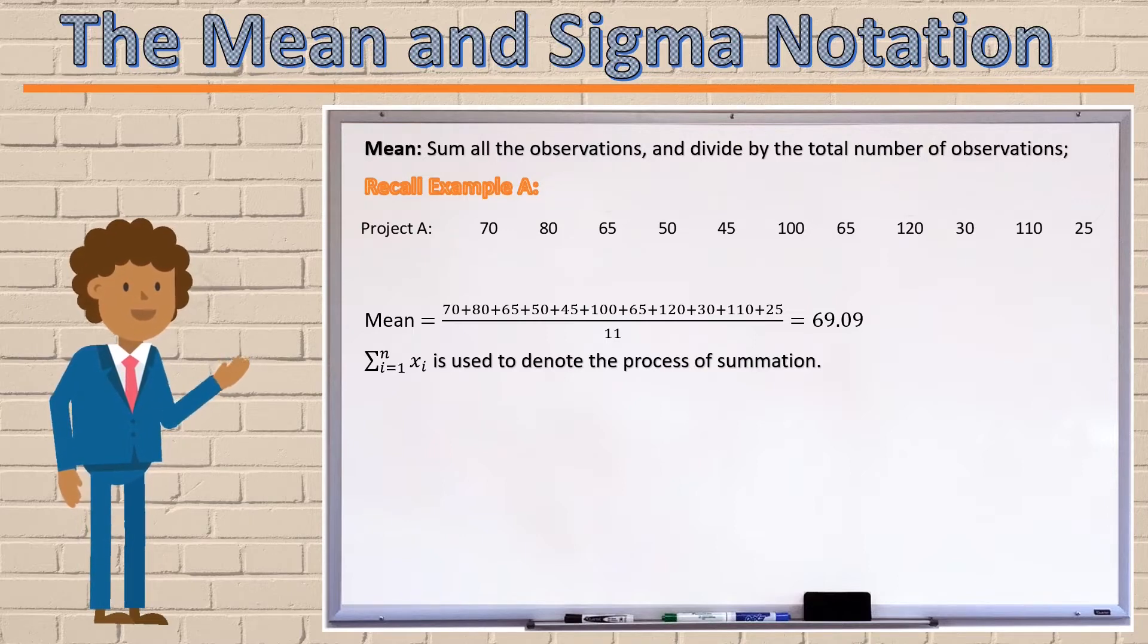The symbol sigma from i equals 1 to n of x subscript i can be interpreted as follows. The i at the bottom of the sigma is called the index of summation. It goes from 1 all the way up to n, the total number of observations to be summed. This means that if we sum all of the terms starting from the first one and ending at the last one, we move from i equals 1, the first observation, all the way to i equals n, the last observation.